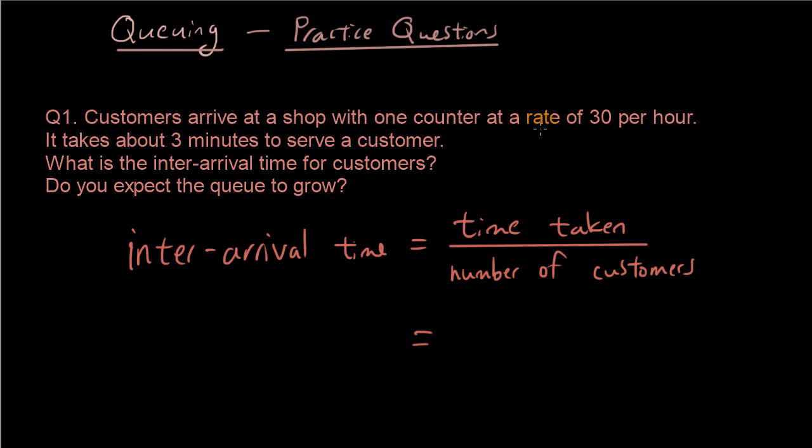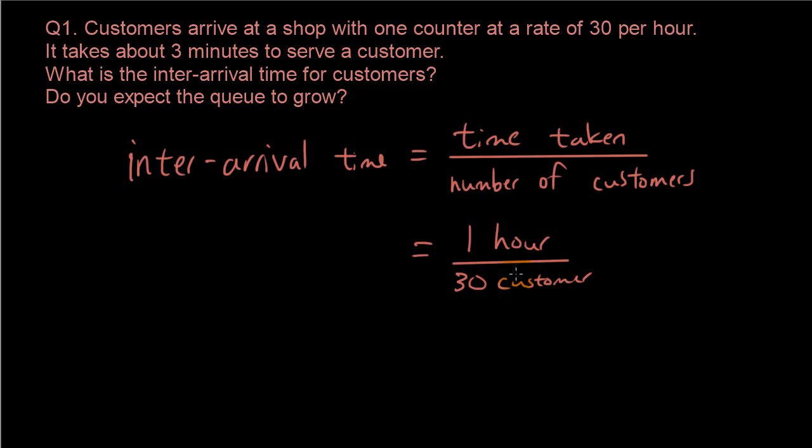It has taken one hour for 30 customers to arrive. So the time taken is one hour divided by the number of customers. Now one hour is not a very easy unit to process, so let's convert that to 60 minutes. So it's 60 minutes divided by 30 customers. 60 divided by 30 is 2, and because we have minutes divided by customers, it will be 2 minutes per customer.